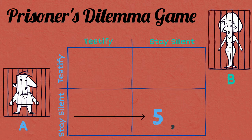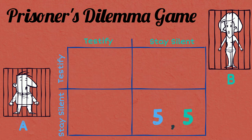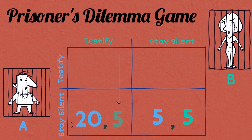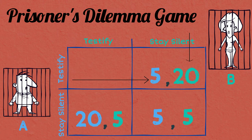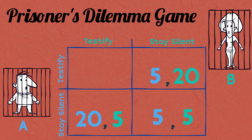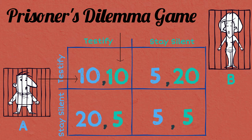If both choose to cooperate and stay silent, they both spend only 5 years in jail. But if A stays silent and B testifies, then A gets 20 years in jail while B gets only 5 years. Similarly, if A testifies and B stays silent, A gets 5 years in jail while B gets 20 years. And finally, if both choose to testify against each other, they both spend 10 years in jail.